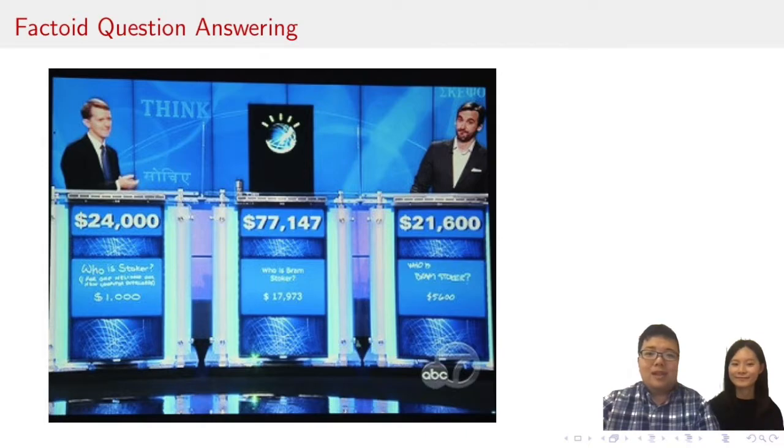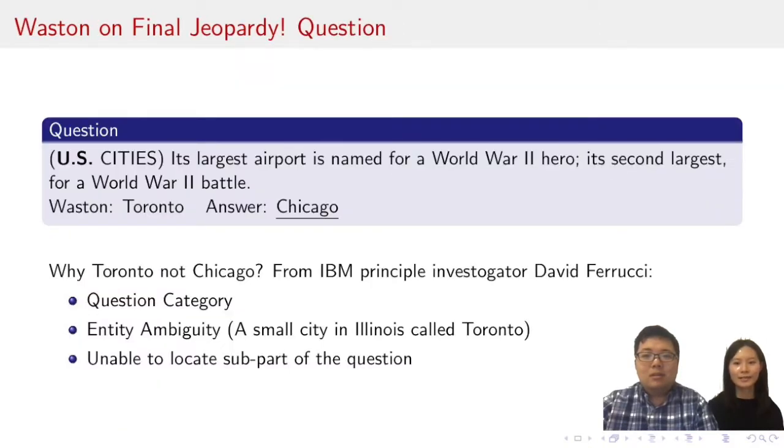But despite all the hype, Watson still got the final Jeopardy question wrong. Its largest airport is named for a WWII hero, its second largest for a WWII battle in the category of US cities. Watson answered Toronto instead of the correct answer Chicago. People analyzed that it may be due to three reasons. First, Watson was giving a downgraded weight to the evidence of the question category. Second, there was ambiguity between entities of the same name. And third, Watson was unable to locate the evidence for some part of the question. But that was 2010, ancient history.